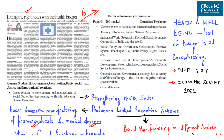The article is titled 'Hitting the right notes with the health budget.' It highlights that the Union Budget has laid a strong foundation to increase the resilience of the health sector in the post-COVID-19 era, with the Finance Minister focusing on health as one of the major six pillars of the 2021 budget.